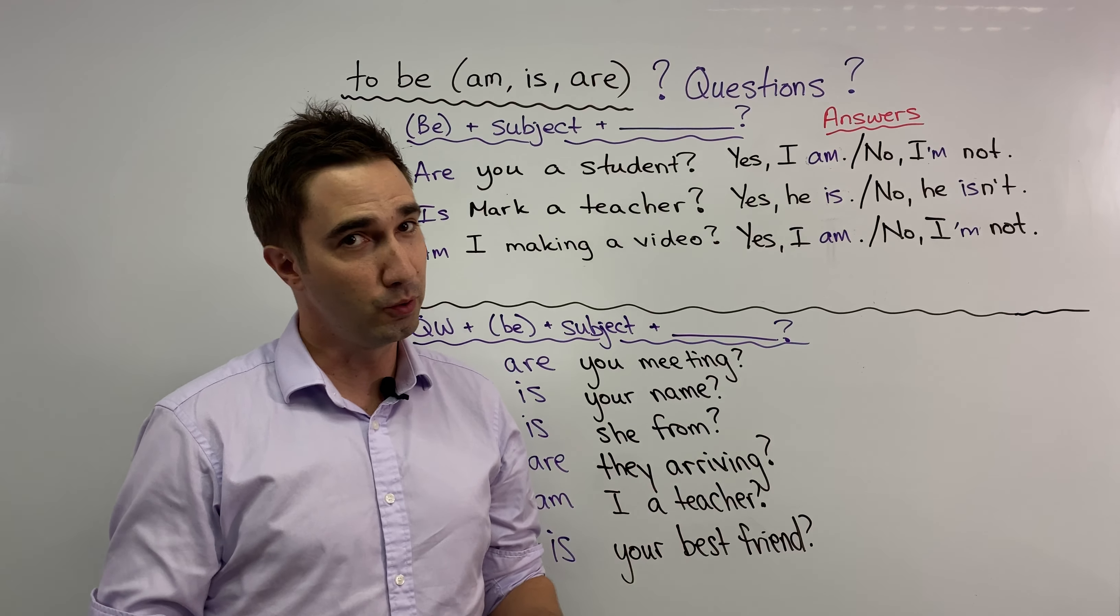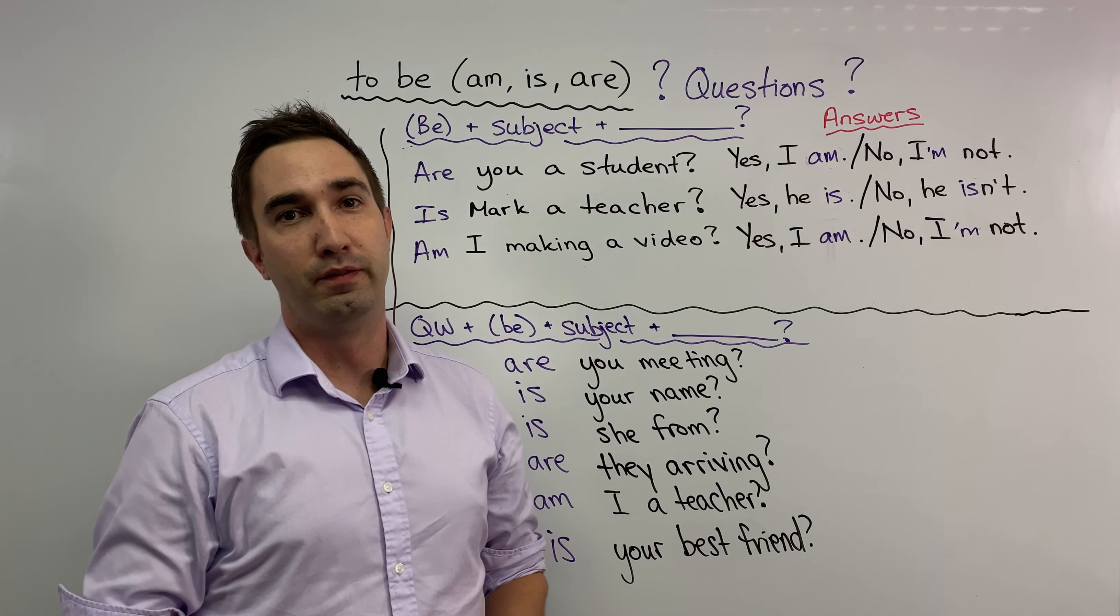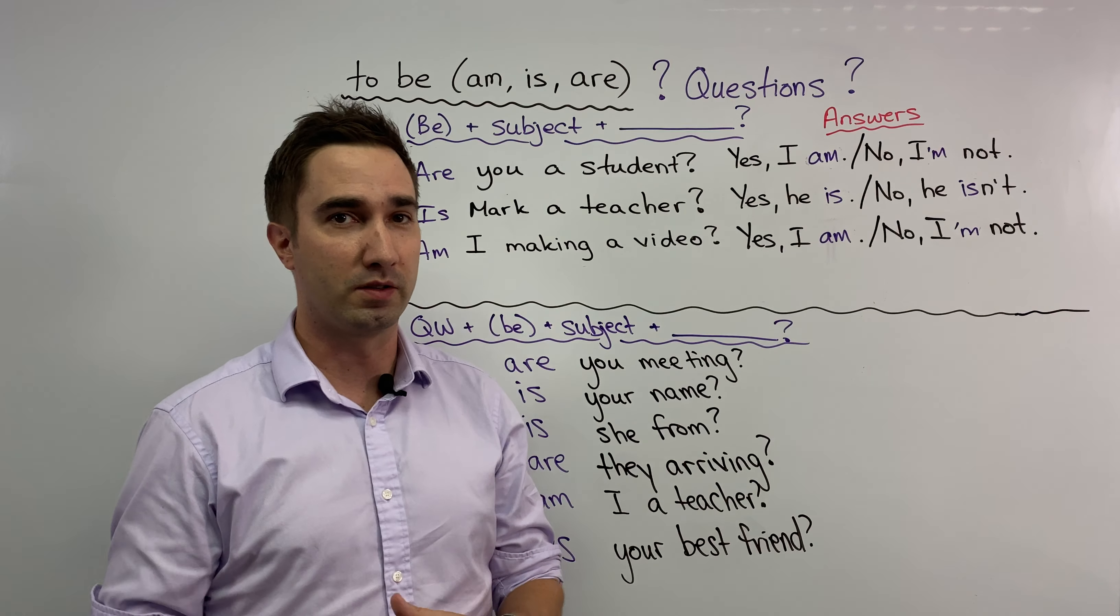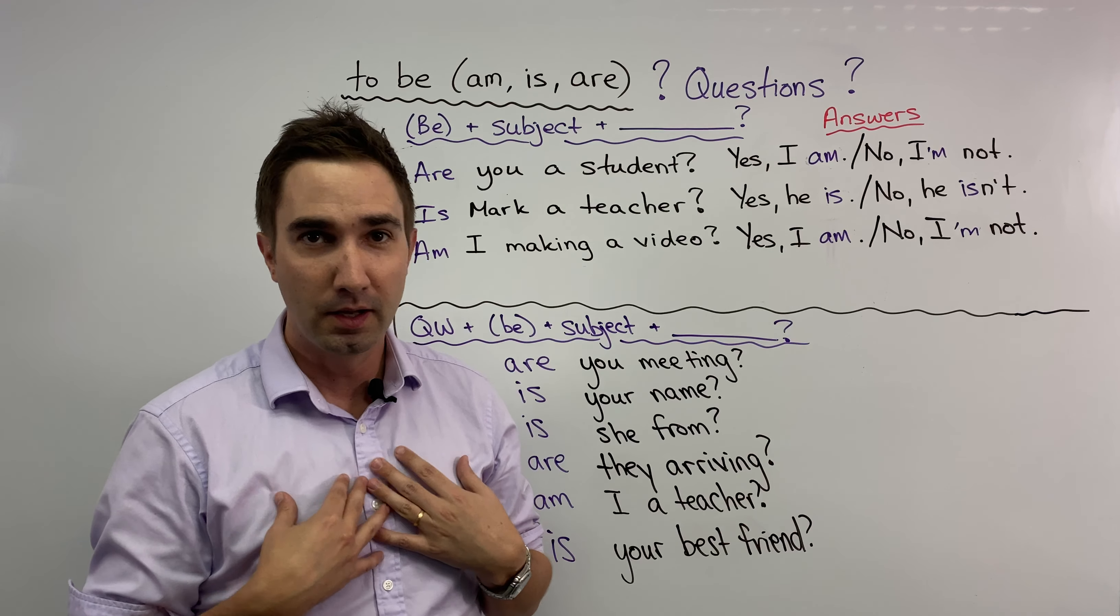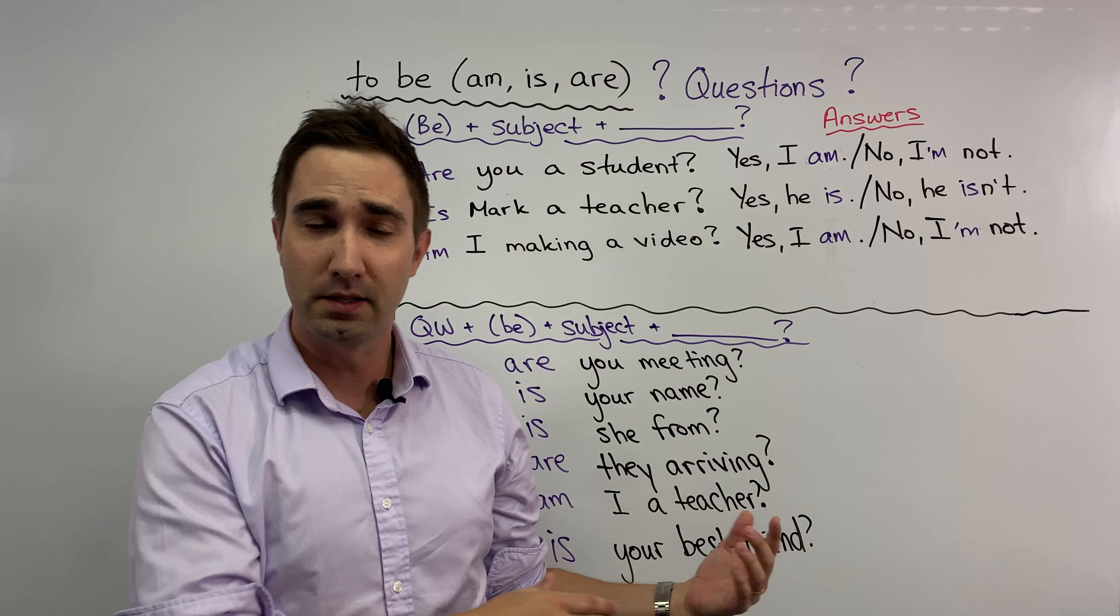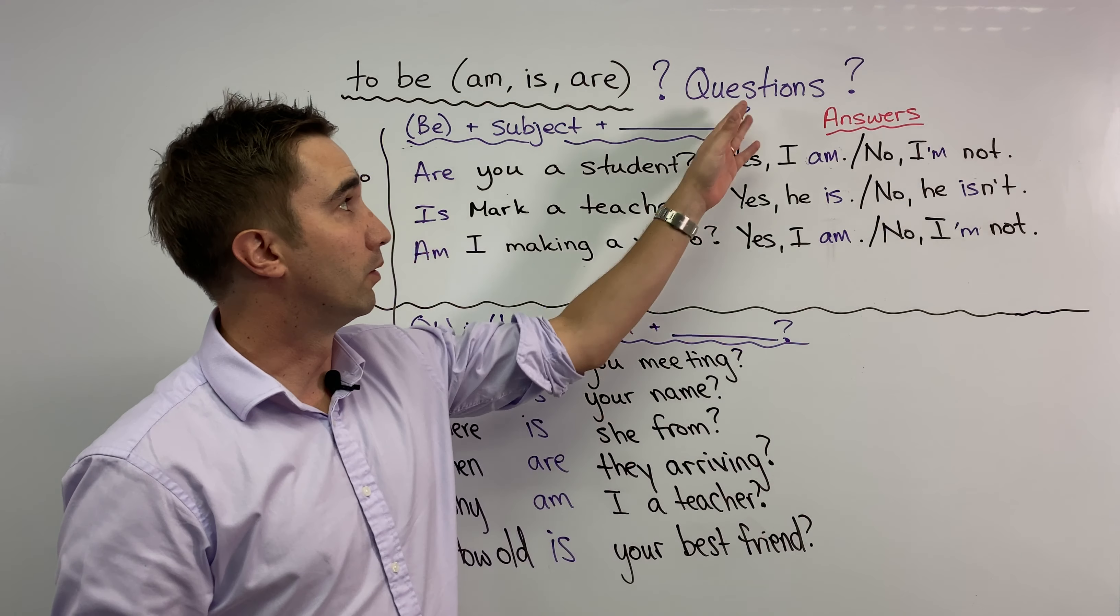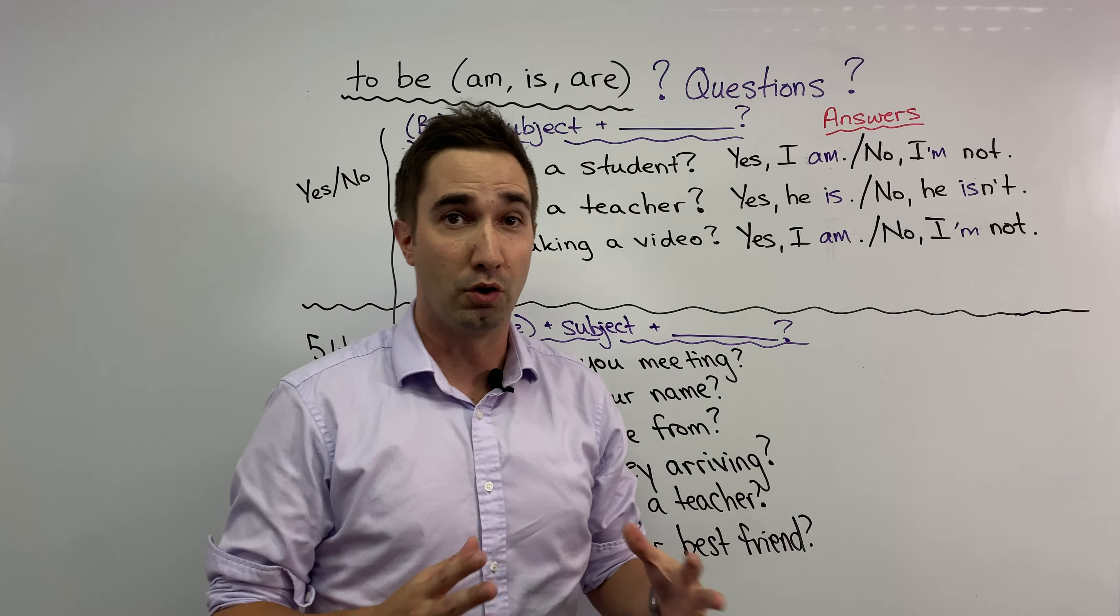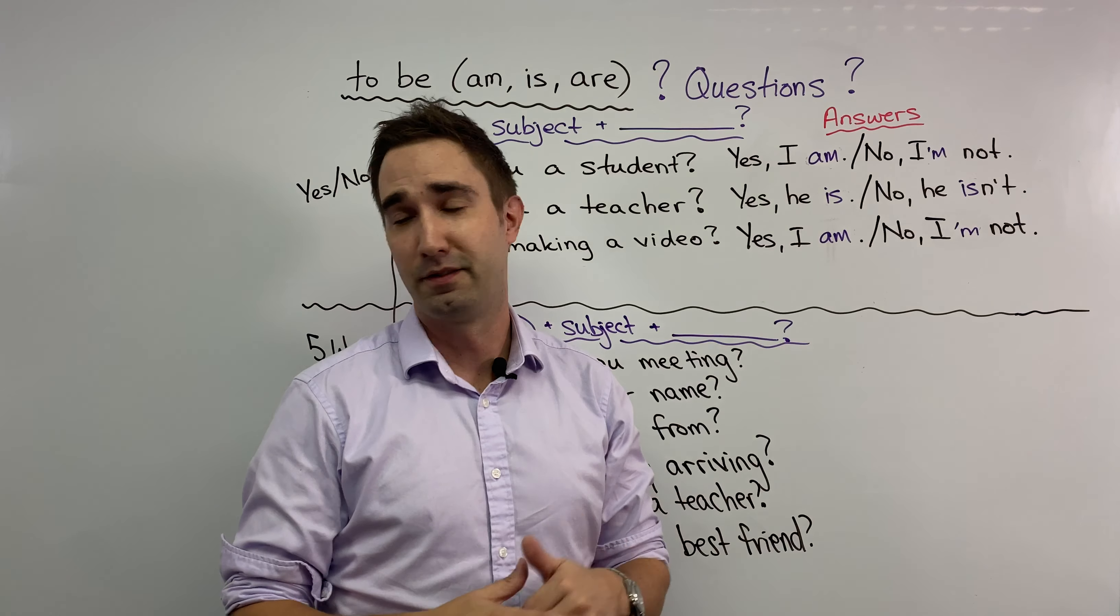Hello students! In my last video we talked about the verb to be, am, is, are in the positive sentences like I am Canadian, in the negative sentences I am not American and today we're going to learn about the questions using the be verb. So we just need to follow this simple formula. It's very easy.